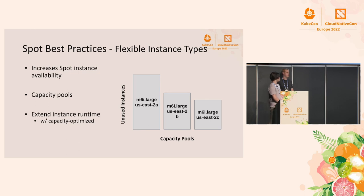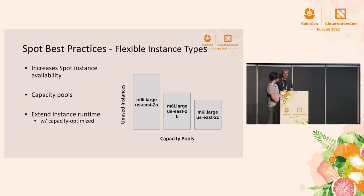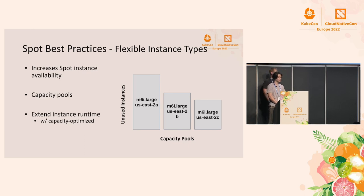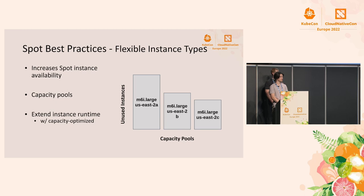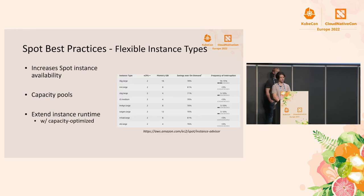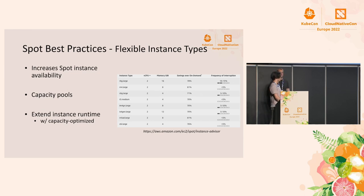Capacity pools are the amount of unused instances in EC2. Here we have three capacity pools: M6i.large in US-East-2A, 2B, and 2C availability zones. There is something you can do with EC2 called the capacity-optimized allocation strategy. When you ask EC2 given these capacity pools, it will pick from the pool with the deepest amount of unused instances. Using capacity-optimized will really maximize your instance runtime, because it'll pick from the pool with the most instances, meaning EC2 will be less likely to reclaim your instance. Notably, if interruptions do happen, they are not going to happen all that often.